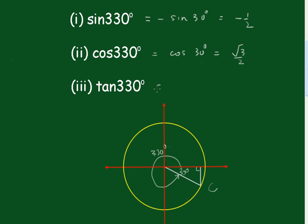And here, the tangent of 330 is minus the tangent of 30, that would be minus 1 on root 3.